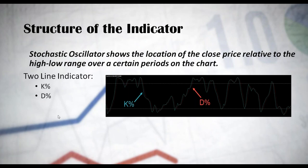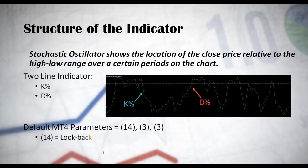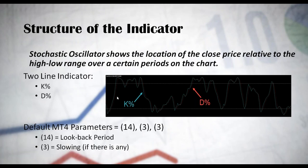The default parameters of the stochastic oscillator are 14, 3, 3. The 14 represents the lookback periods used by the indicator to calculate its value. The first 3 is the slowing of the indicator — you can speed it up or slow it down; by default it comes with a smoothing of three periods. The other 3 represents another smoothing, which corresponds to the red line (the D line). This will be covered in more detail in the next slide when discussing the calculation of the stochastic oscillator.